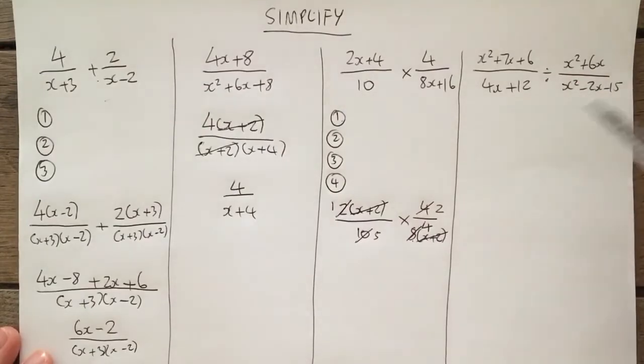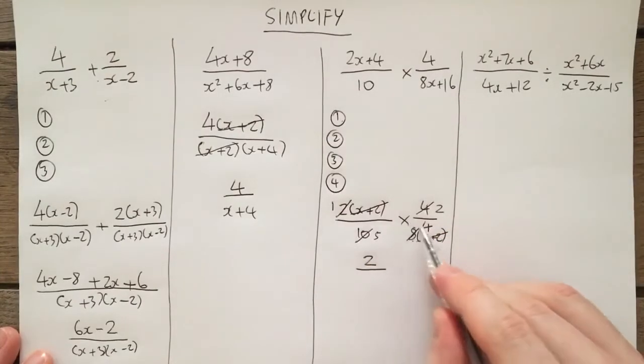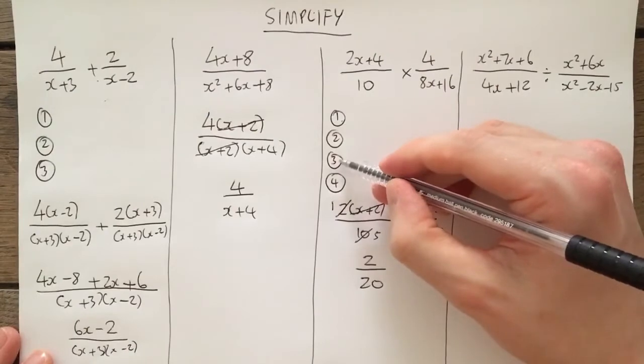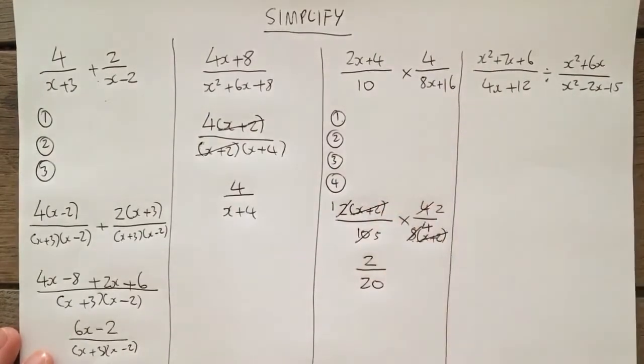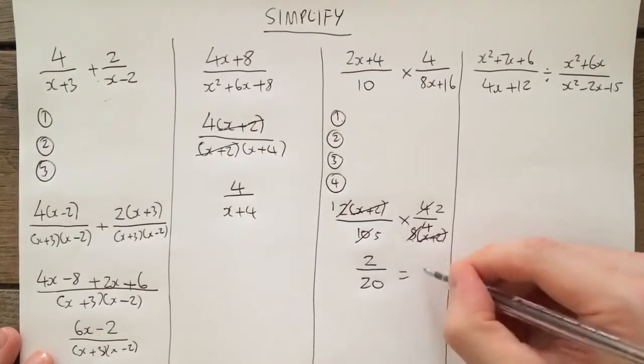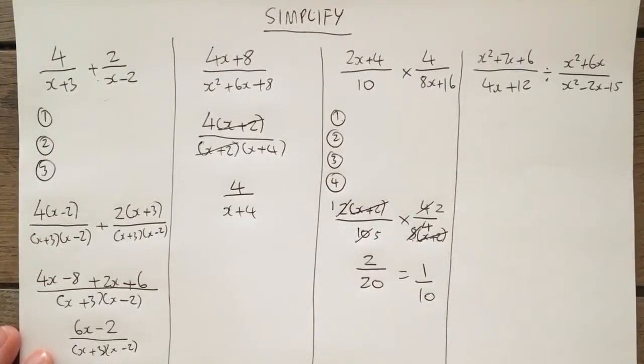So really what we've got here is 1 times 2, which is 2, over 5 times 4, which is 20. So that's our third step right there. Our third step is to multiply the numerator and multiply the denominator. Then my fourth step is just double-check, can I simplify any more? And the answer to that is yes, because 2 out of 20 can both be divided by 2 to equal 1 out of 10. So that's my final answer.